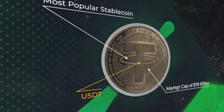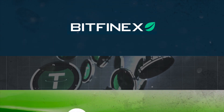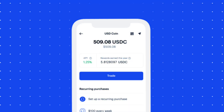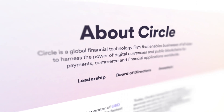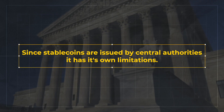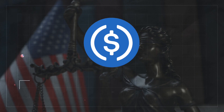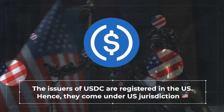USDT is the most popular stablecoin with a market cap of $78 billion, issued and controlled by Bitfinex and Tether Limited. USDC has a market cap of $32 billion and is issued by Coinbase along with Circle, a global financial technology company. However, because they are issued by central authorities, there are certain limitations — for example, the issuers of USDC are registered in the US and hence come under its jurisdiction. Because of this limitation and trust factor, the need for stablecoins run by decentralized organizations came into the picture.